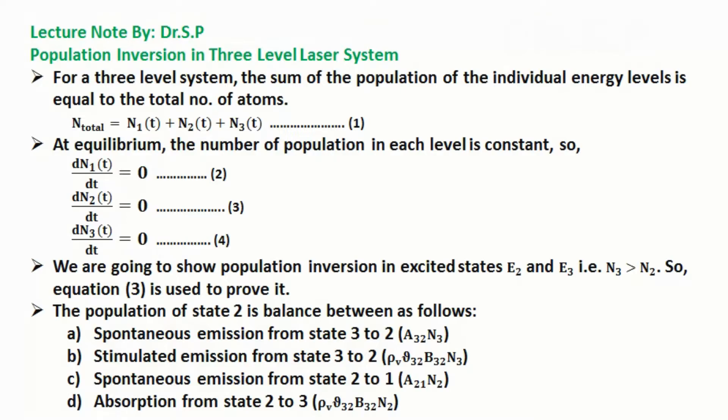We are going to show population inversion in excited states E2 and E3, that is, the number of atoms in the third energy state is greater than the number of atoms in the second energy state. So equation 3 is used to prove it. The population of state 2 is balanced between as follows: